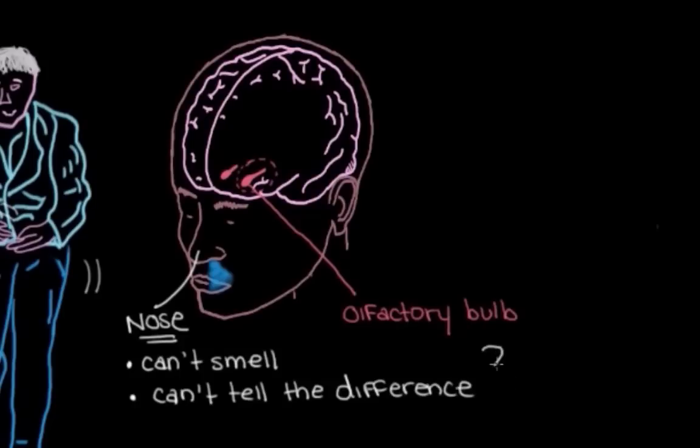So these problems with smell are actually really common in Parkinson's disease, and they can actually be one of the first things that goes wrong, sometimes before even those movement problems that we think about when we think of the disease.